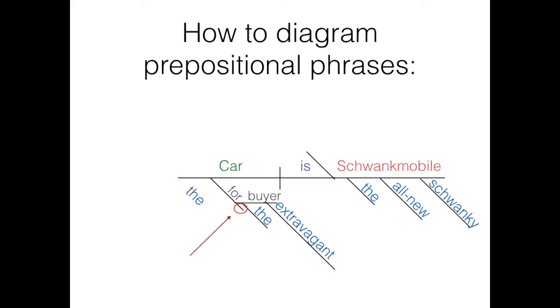So that sentence is an example of a prepositional phrase modifying a noun. It is possible for a phrase to modify other nouns in the sentence, though. For example, a direct object. They're still diagrammed the same way, just coming from a different noun.